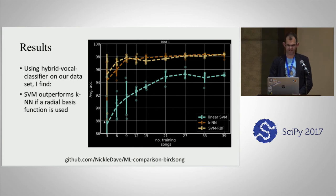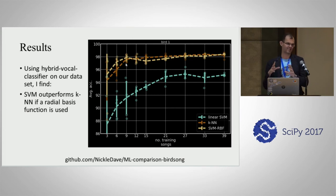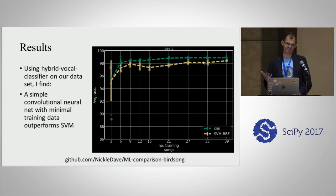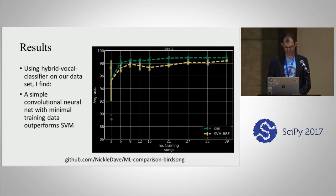Here's an example from one bird — a re-run from last year's poster. The take-home message is: if you use a radial basis function kernel, you can rescue support vector machines and they do as well as k-nearest neighbors. Then I implemented the convolutional neural network, and — maybe not surprisingly — it does better than even the tweaked support vector machine. But if you're in this subfield and don't have a GPU, this makes it possible to test whether a support vector machine is good enough.